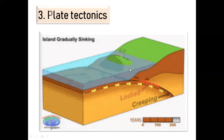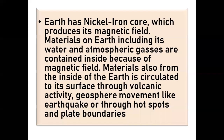Earth has a nickel-iron core which produces its magnetic field. Materials on Earth, including its water and atmospheric gases, are contained inside because of this magnetic field. Materials from inside the Earth are also circulated to its surface through volcanic activity, geosphere movement like earthquakes, hot spots, and plate boundaries.